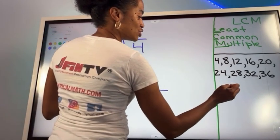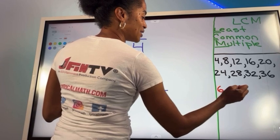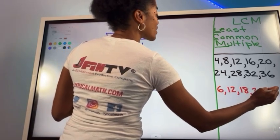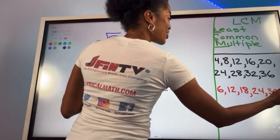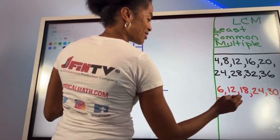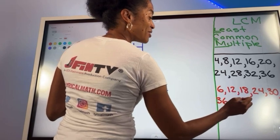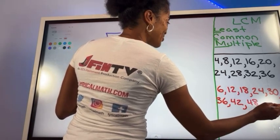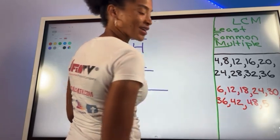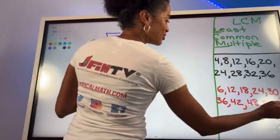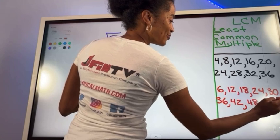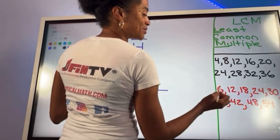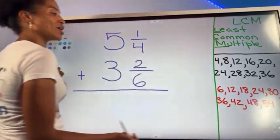We're then going to do the same thing for the other denominator which is 6. So we want to do 6, keep adding 6: 12, 18, 24, 30, 6 more, 36, 42, 48. What's next? 6 more is going to give us 54. And so again we're going to go all the way up to 6 times 9 which gives us 54.